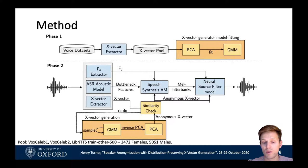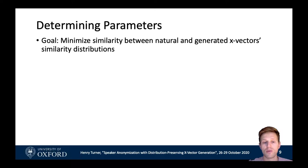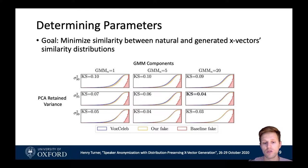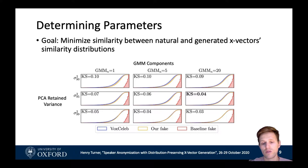The next step is determining the optimal parameters for our PCA and GMM models. Our goal is to minimize the similarity between the distributions of similarities in the natural and generated x-vector populations. We use the Kolmogorov-Smirnov test, which lets us compare how similar two cumulative distributions are. The blue line represents the x-vector similarity distribution from naturally occurring x-vectors in the VoxCeleb dataset, and the red line is the baseline system. We fit the GMM with increasing numbers of components and increased PCA variance retained to get the closest fit to the natural distribution. In the end we settled for 20 GMM components and 95% of variance retained, as we didn't want to overfit and create x-vectors too similar to one another with no random variation.